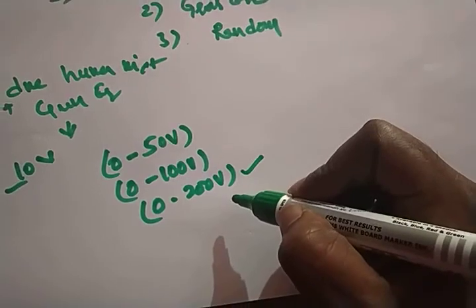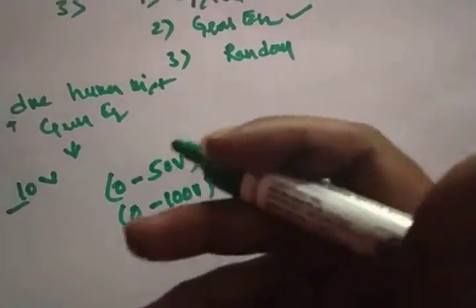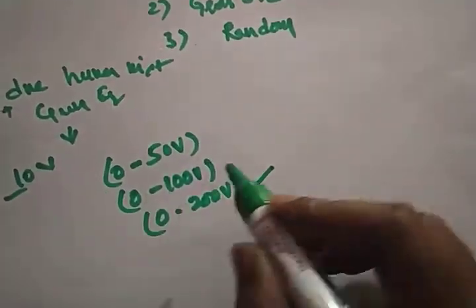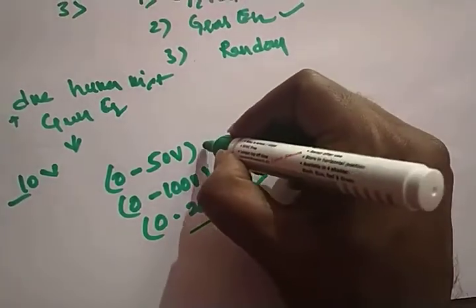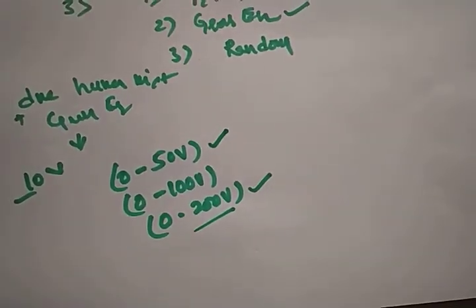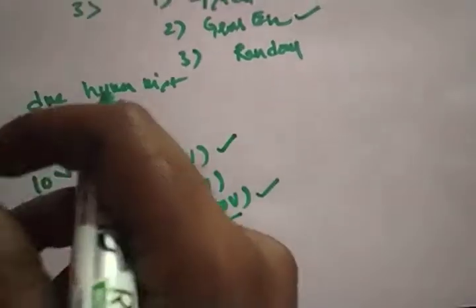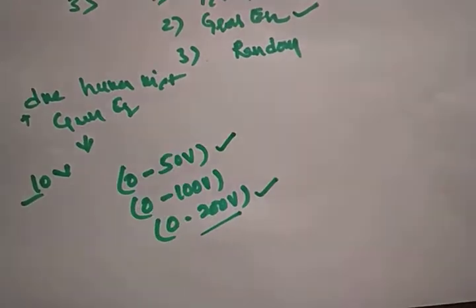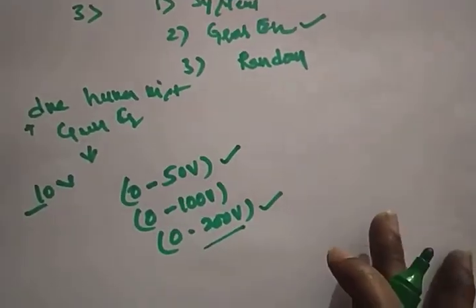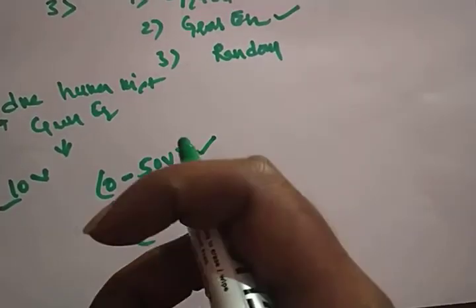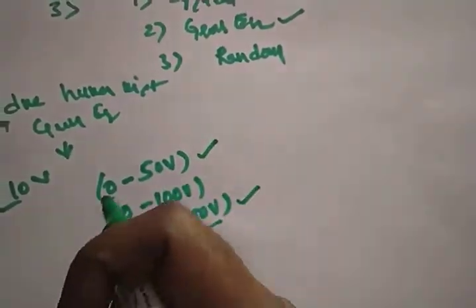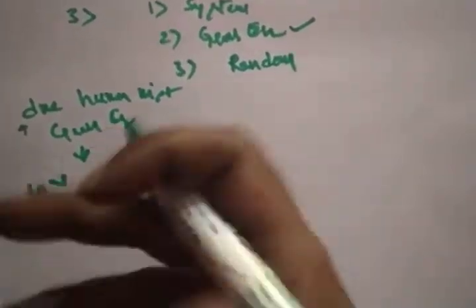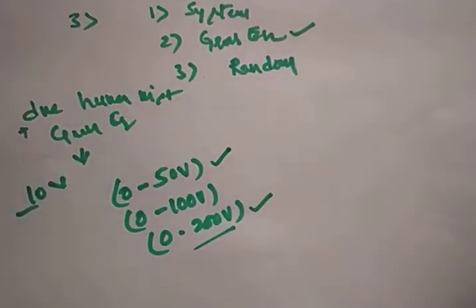If you choose the 0-to-200 volt instrument, the limiting error is going to increase. The best choice is the 0-to-50 volt instrument — then you will get less limiting error. If a person doesn't know what type of instrument to take, that is definitely a human mistake, which is a gross error.